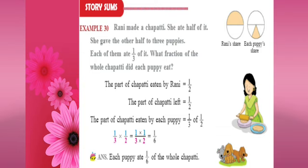Next sum: Rani made a chapati. She ate half of it and gave the other half to 3 puppies; each puppy ate 1 by 3 of the remaining half. What fraction of the whole chapati did each puppy eat? The part eaten by Rani is 1 by 2. The remaining half is shared among 3 puppies, so each puppy ate 1 by 3 of 1 by 2, which is 1 by 3 into 1 by 2 equals 1 by 6. Each puppy ate 1 by 6 of the whole chapati.